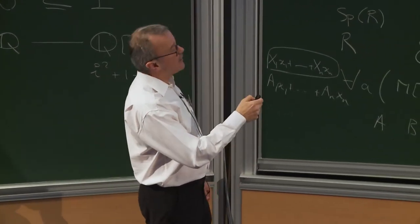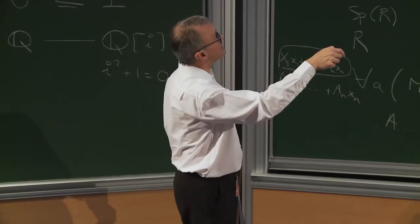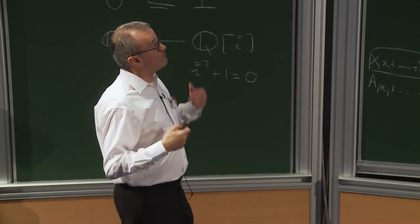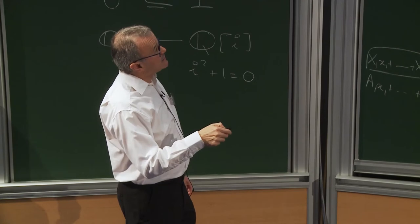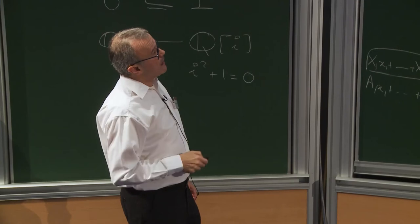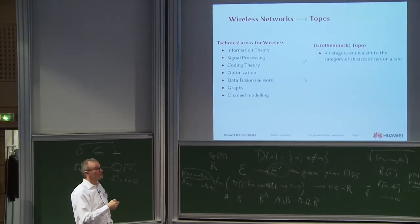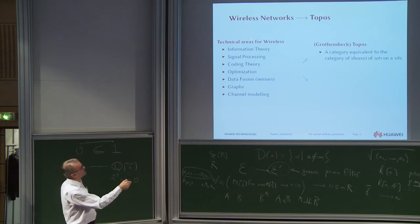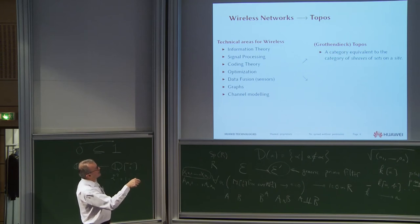If I just copy the definition of the Grothendieck topos, what can be the relation between that and wireless networks? This is not obvious at all — that was the problem I was faced with. Which of these items can be impacted by toposys? It's not easy to answer directly, but just using the definition we can first try to find some relations. Daniel has shown in his talk the relation between information theory and the topos. For the other ones there can be some relations, and I will start by finding some relations between these points and sheaves.